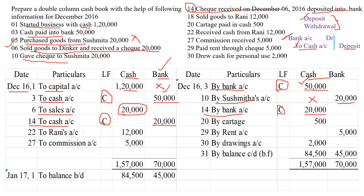Moving on to the next one: sold goods to Rani — here we are selling goods but cash is neither received nor is a check received, so this transaction will not be recorded in the double column cash book. Then cartage paid in cash. We are making a payment — when payment is made, it should be credited. So by cartage — and since we are paying in cash, I am recording it in the cash column, 500 rupees.